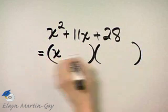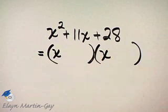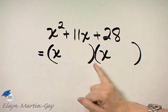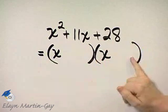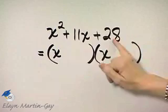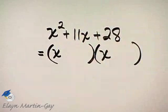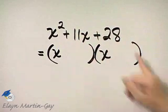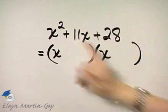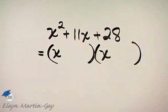x times x will give us x squared. Then we are looking for two factors of 28 whose sum is 11. What are two factors of 28 whose sum is 11?